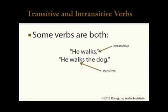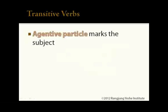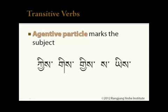In Tibetan, there are some important distinctions that occur with respect to transitive and intransitive verbs. Sentences with transitive verbs have subjects that are marked by particles called agentive particles. We'll cover agentive particles in detail next week, but all you need to know for now is that they mark the agent of an action. Like the connective particles, the spelling of an agentive particle changes depending on the syllable that comes before it.